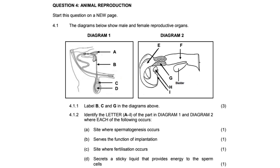Label C is just above the testes - that is the epididymis. This is the coiled tube where sperm matures and is stored. Then G is on the next diagram - that is the cervix. This is the lower part of the uterus which opens into the vagina and serves as the passage for sperm as well as menstrual fluid. Remember, you are not asked to explain anything, just label: B is vas deferens or sperm duct, C is epididymis, G is cervix.